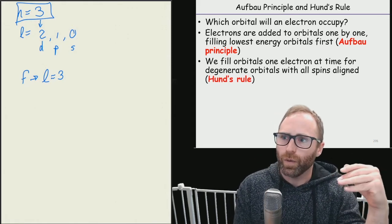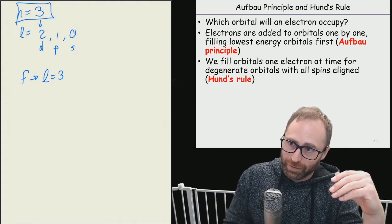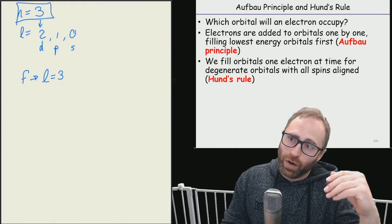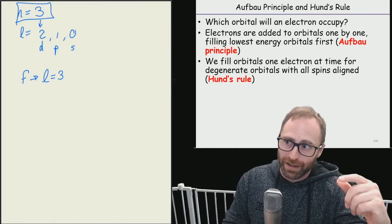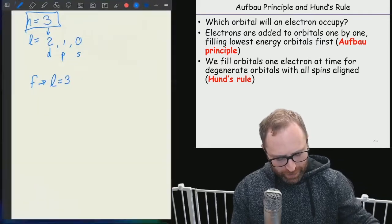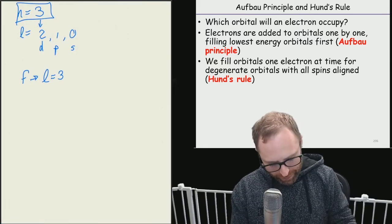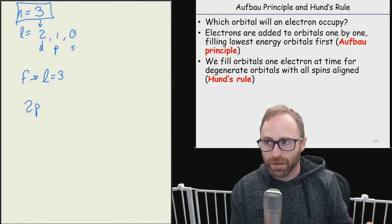We're also going to fill orbitals one electron at a time for degenerate orbitals with all of our spins aligned, and this is going to be Hund's rule. So for example here if we go to the slides, if we have a p orbital, let's say we got ourselves a 2p.